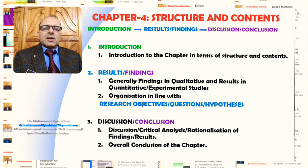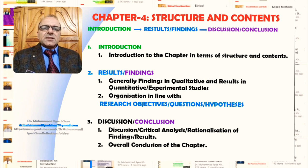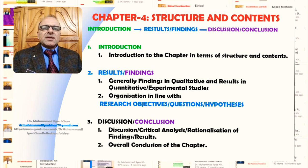The results and findings should be followed by a discussion, critical analysis, or rationalization section, which indicates that the researcher has a deeper theoretical and contextual understanding of the findings. Lastly, there should be an overall conclusion of the chapter — a summary so that the reader can easily get a holistic picture. It is also very important to write this chapter, like the rest of the thesis, in academically correct language so that the message is clear and precise.